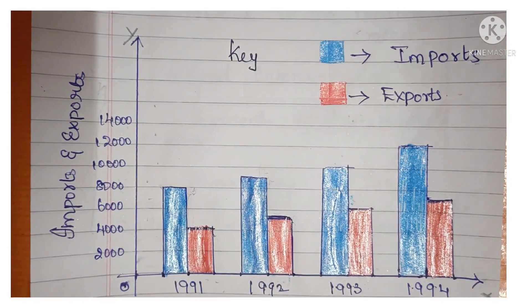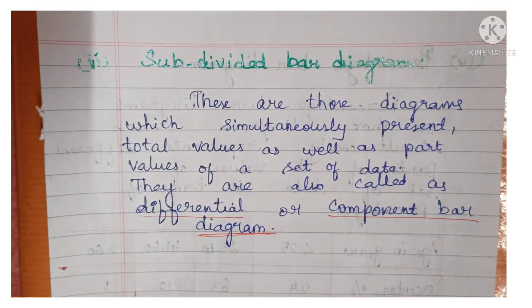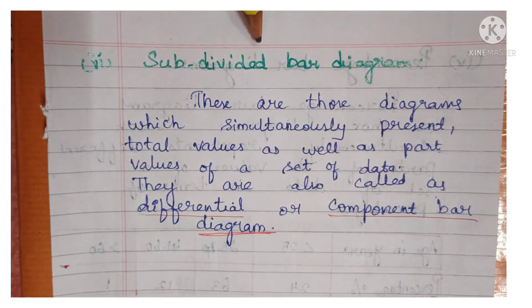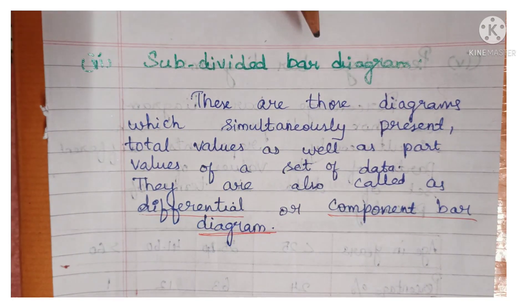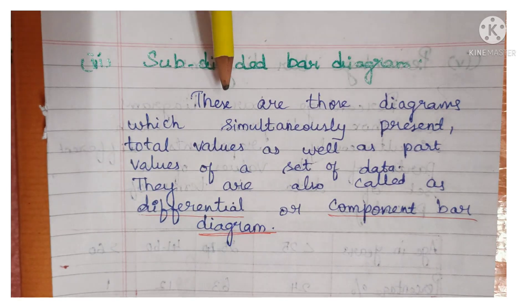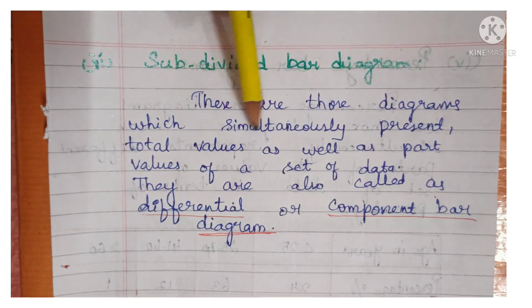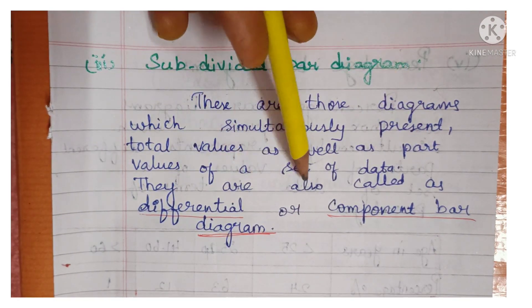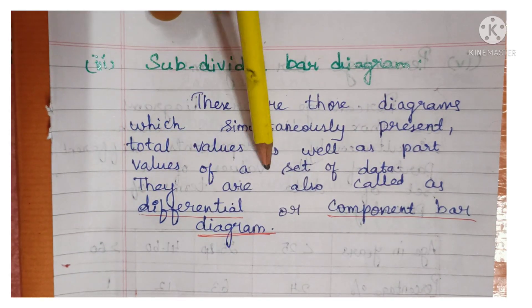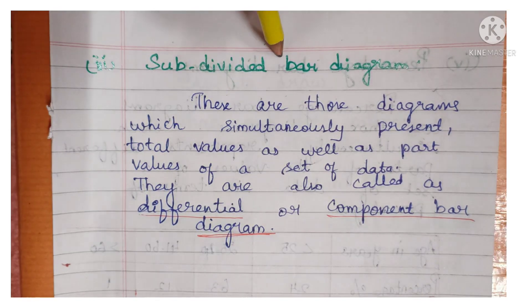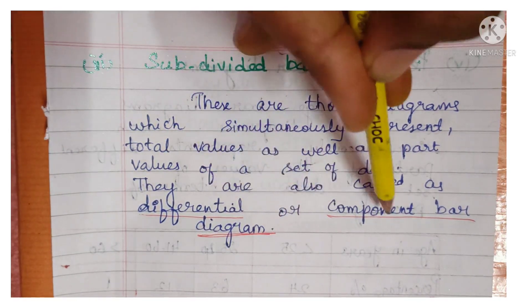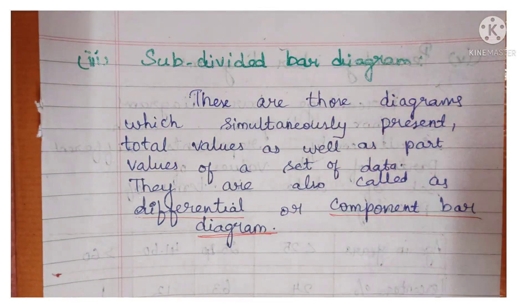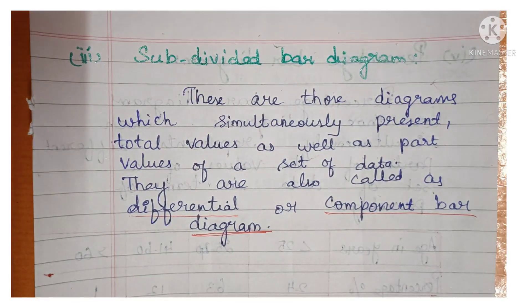Next is the subdivided, or component, or differential bar diagram — the third type. These are diagrams which simultaneously present total values as well as part values of a set of data. It represents both the total value and the part values of the data set.